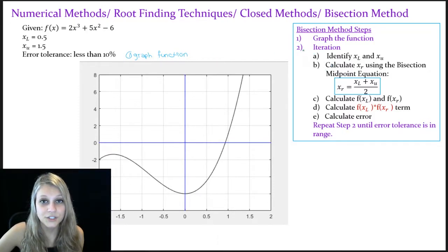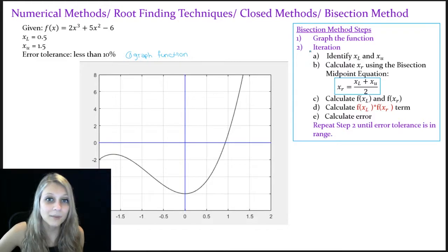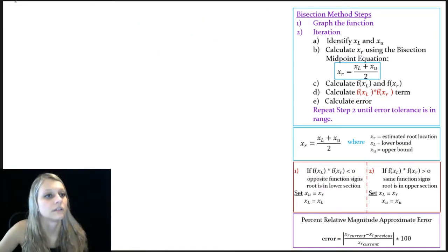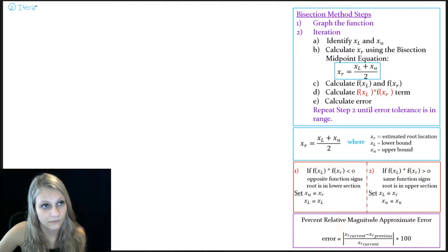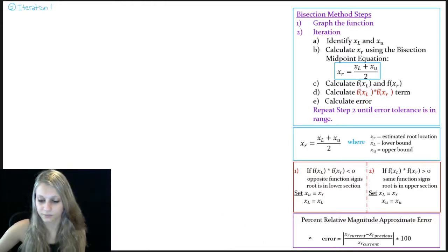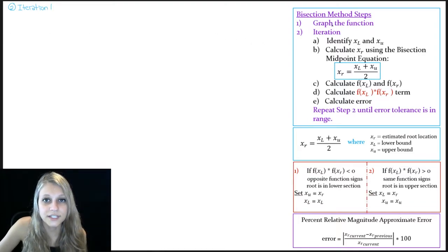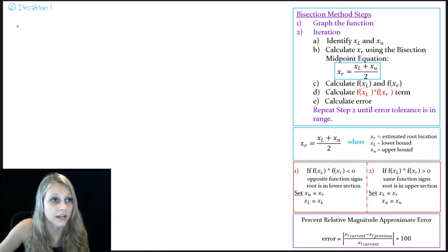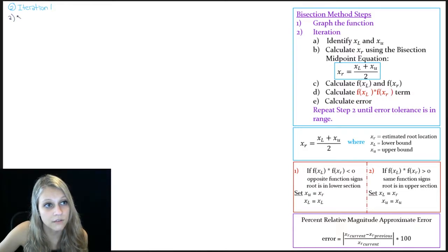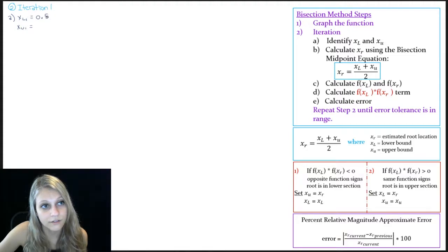The next step is to perform our first iteration. The first step of my iteration is to determine my lower and upper bounds, which were actually already given to us in the original problem. The lower bound is 0.5 and the upper bound is 1.5.